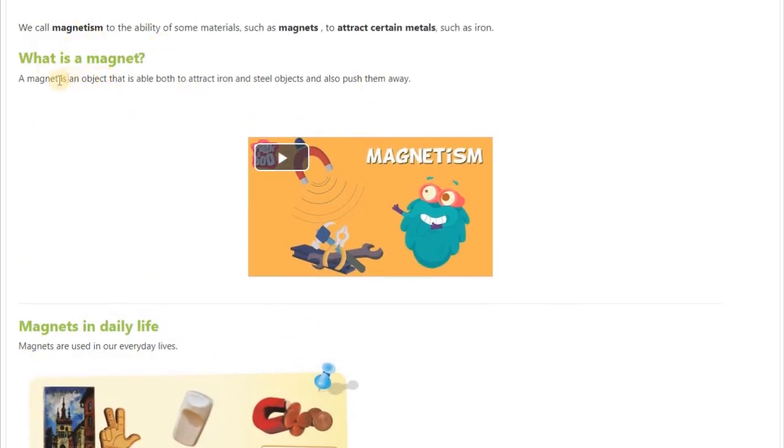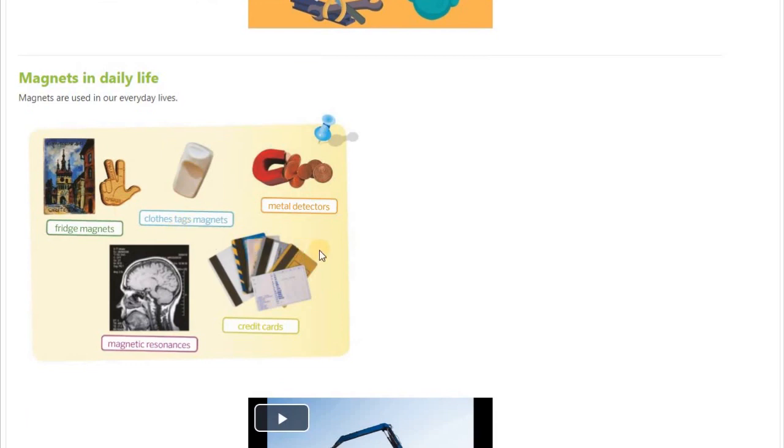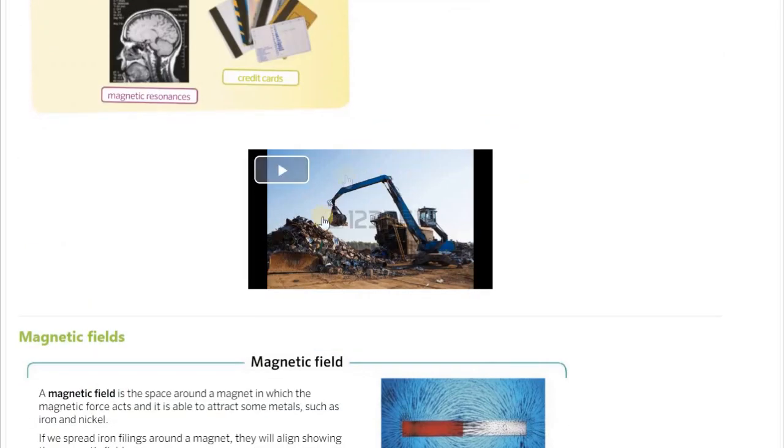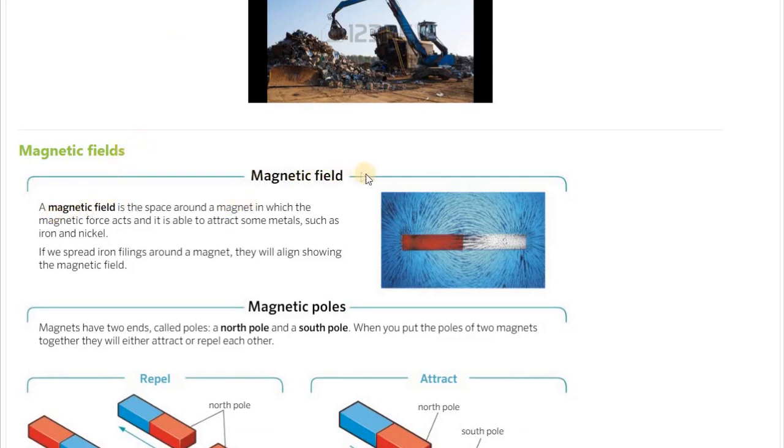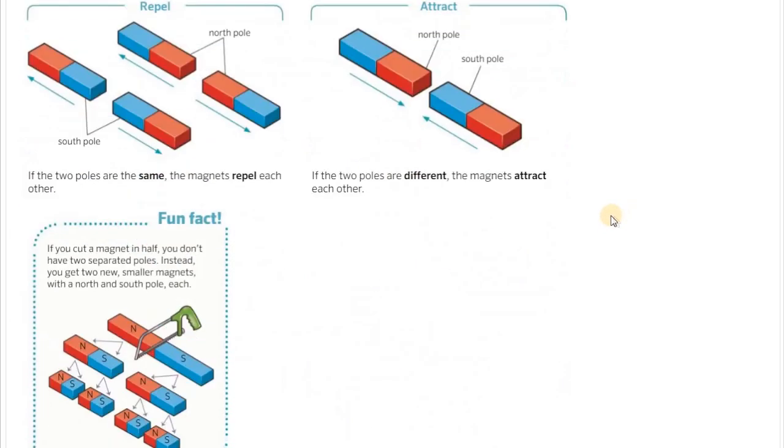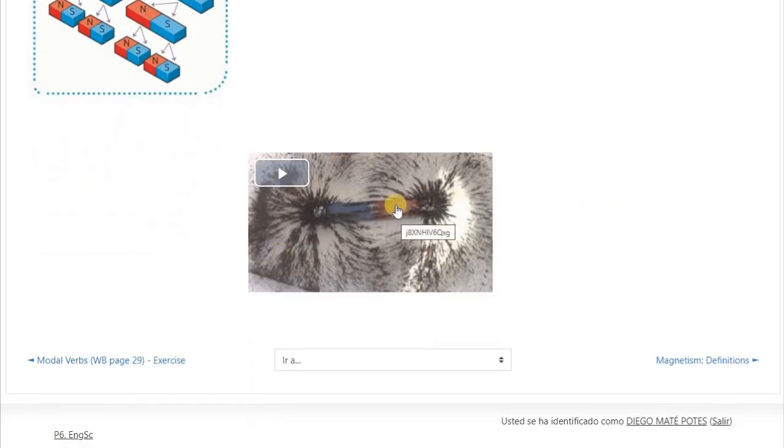First of all, we saw the definition of a magnet, which is an object with the ability of attracting some metals. We saw some uses of magnets in our daily lives such as fridge magnets, cloth stack magnets, metal detectors, magnetic resonances, and credit cards. We saw the concept of magnetic field, which is the space around the magnet where the magnetic force acts. Down here you had a video where some iron fillings are spread around the magnet and you can see how those iron fillings align showing the lines of the magnetic field.